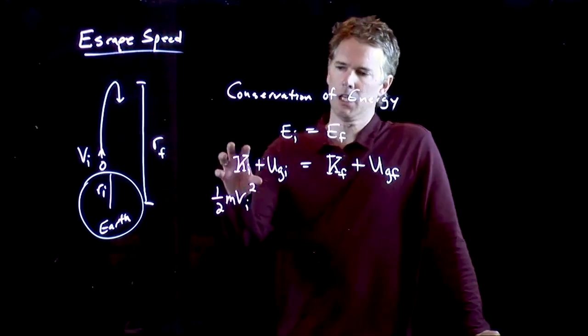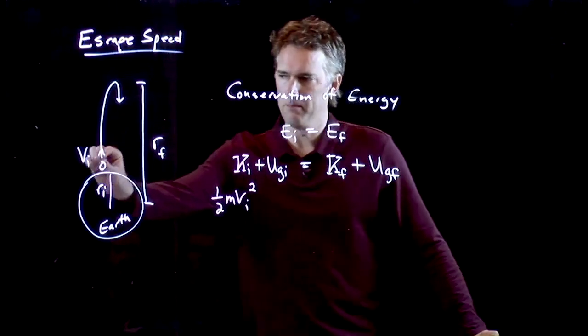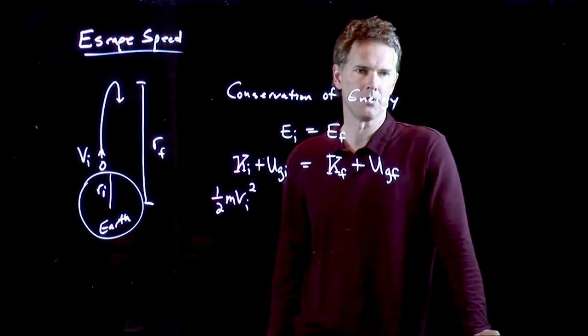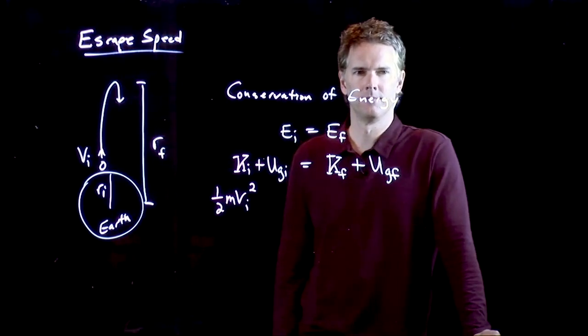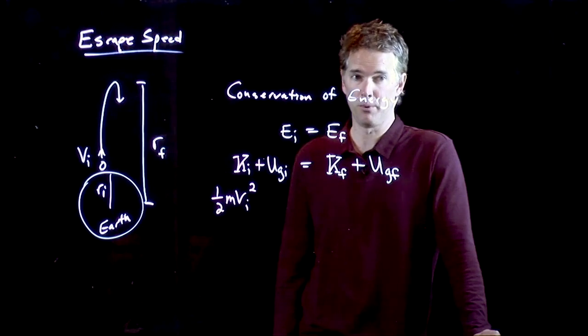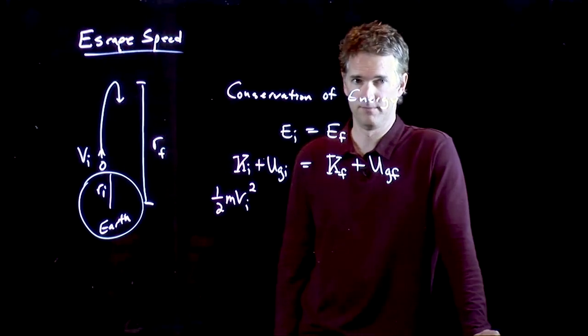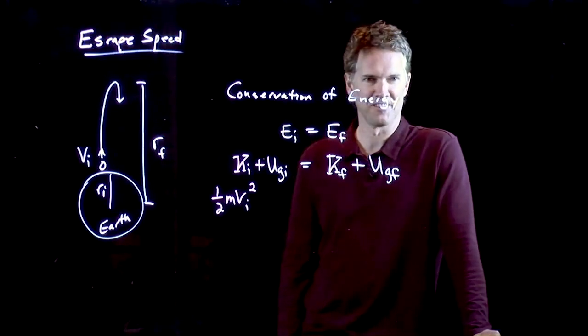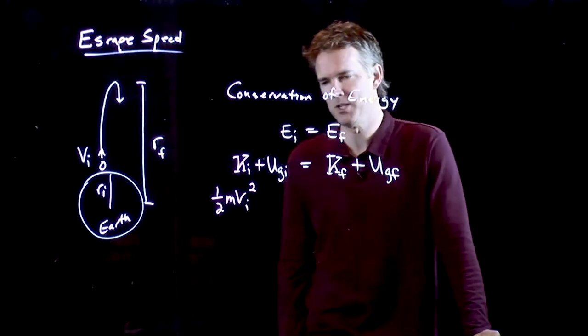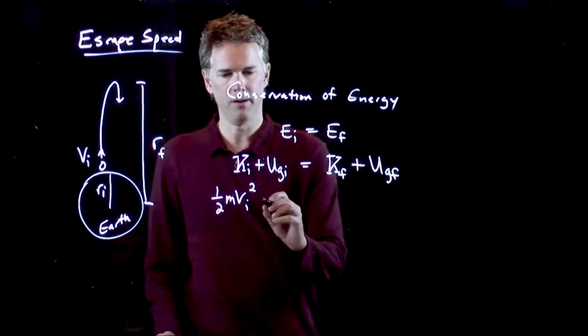Okay, Matt, I just wrote down the kinetic energy for this particle immediately after launch. What do I want to put here for the gravitational potential energy? Should I put MGH? Good. You were listening 30 seconds ago. I don't want to put MGH there. I want to put something else. What do I want to put?